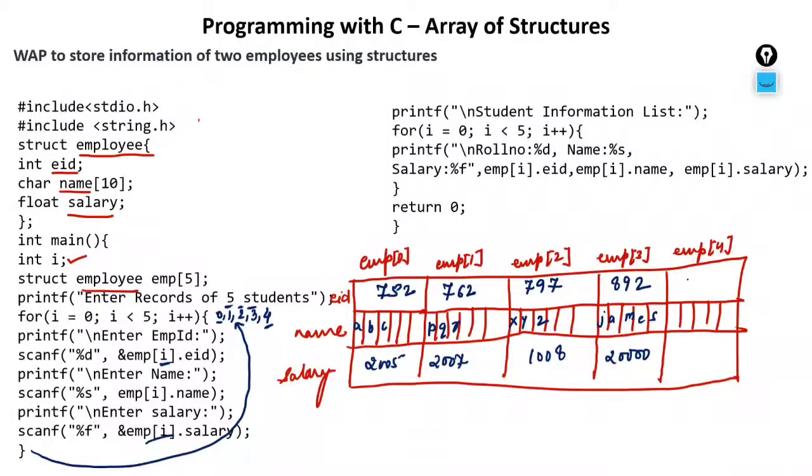Again it will increment because now there is no scope of increment. We have created, we have filled all the variable, all the array of structure. So now the information is complete. Now we will access the information.